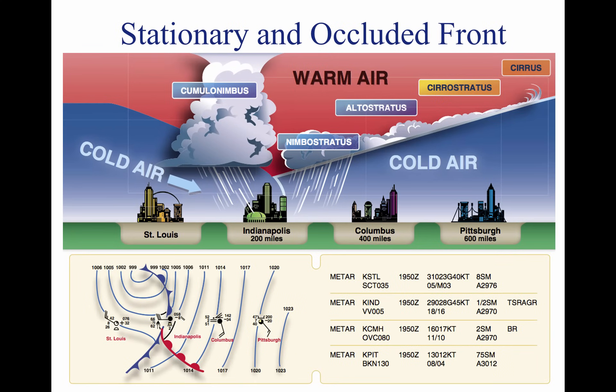When the forces of two air masses are relatively equal, the boundary or front that separates them remains stationary and influences the local weather for days. This front is called a stationary front. The weather associated with the stationary front is typically a mixture that can be found in both warm and cold fronts.